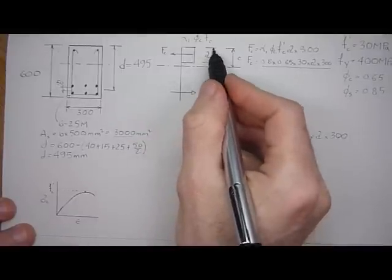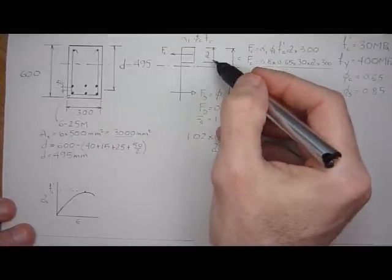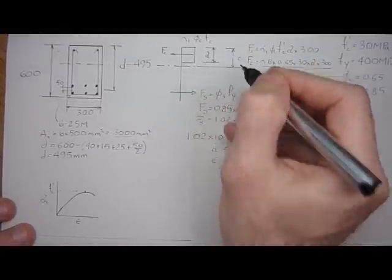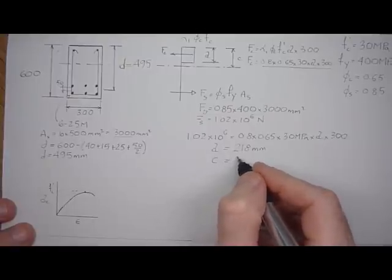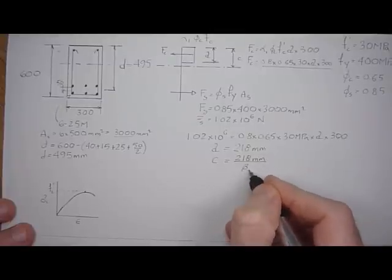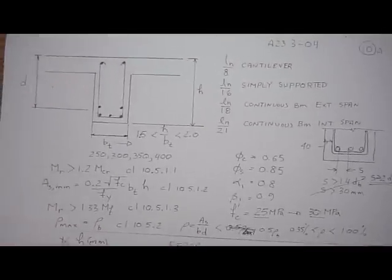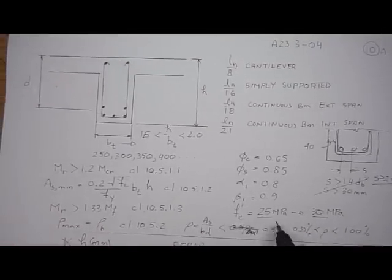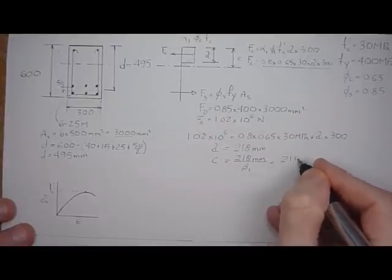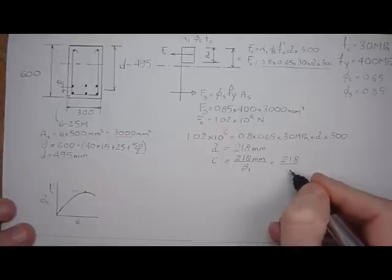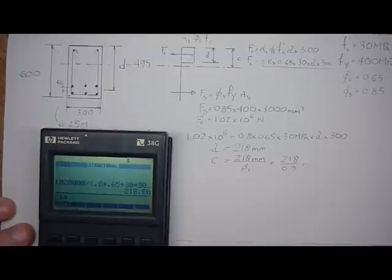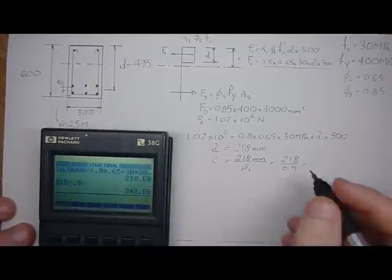So this A here, this A is 218 mm. And we can also solve for C, because this C is a function of A. It's 218 mm divided by beta 1. And like we said, beta 1 is always going to be 0.9 for 25 or 30 MPa concrete. So this is going to be 218 mm divided by 0.9, 218 divided by 0.9. That's 242 mm.